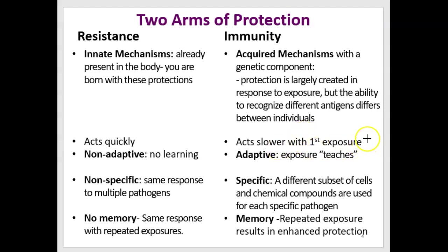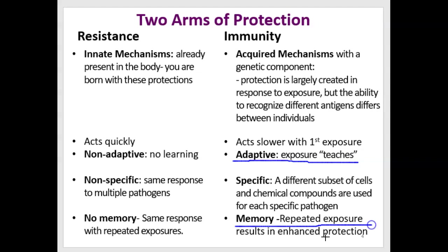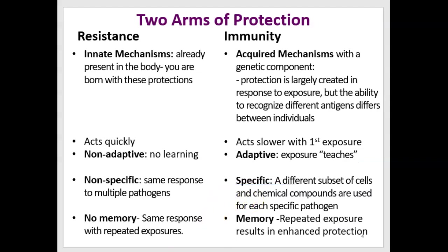Immunity acts slower with the first exposure, but it's adaptive — meaning learning takes place. Exposure teaches our cells to respond quicker with subsequent exposures, so memory is created. Repeated exposure results in enhanced protective ability because it fights off the pathogen quicker. Immunity is also specific: there's going to be a different subset of white blood cells and chemical compounds used for each pathogen.